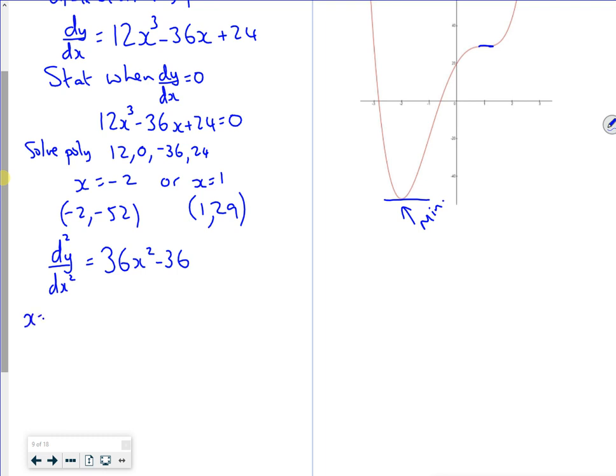When x = -2, the value is... let me calculate: 36 times 4 minus 36, which is 108. Right then, so that's greater than 0.